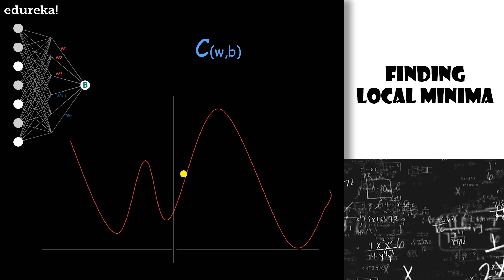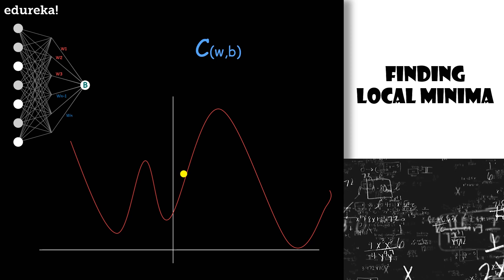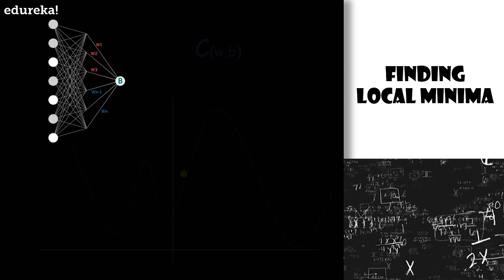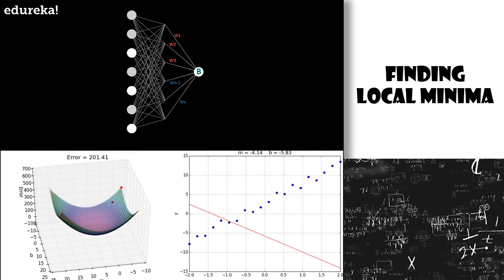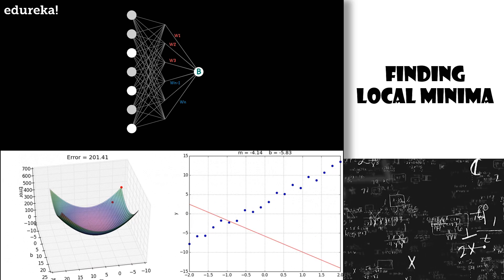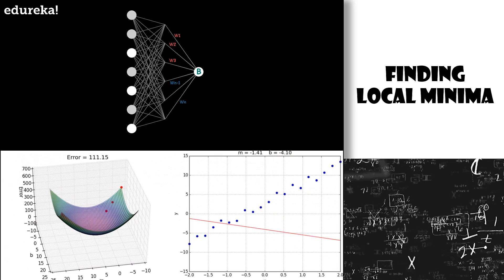There is a beautiful analogy which suggests an algorithm which works pretty well. We start by thinking of our function as a kind of a valley. What we do is we imagine a ball rolling down the slope of the valley. Our everyday experience tells us that the ball will eventually roll to the bottom of the valley. Perhaps we can use this idea as a way to find the minimum of the function.